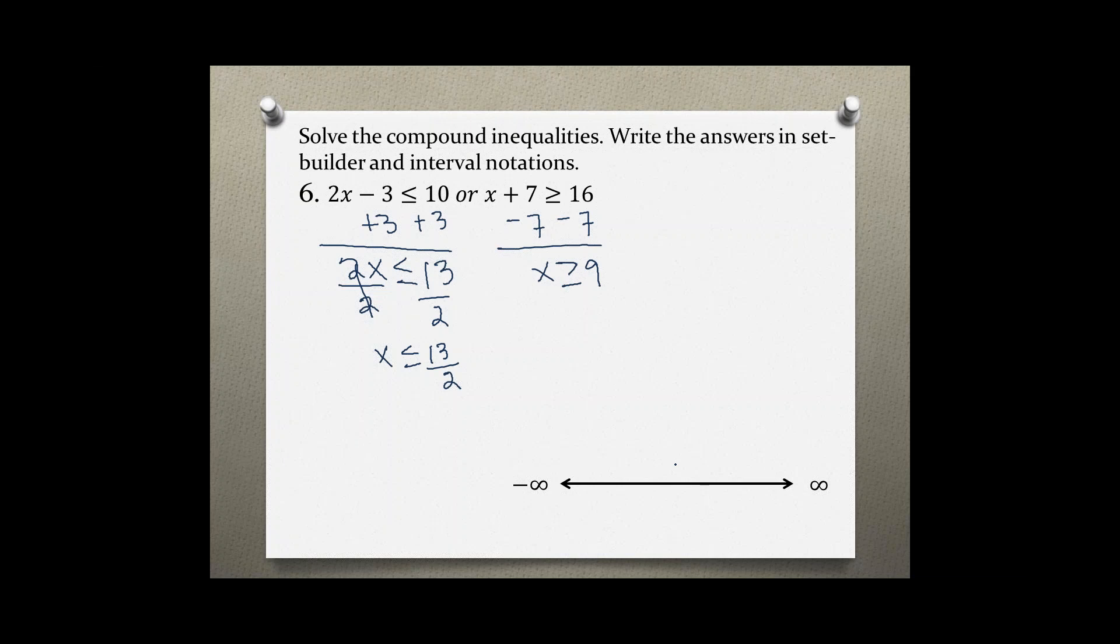So we're going to graph each number on the number line, 13 over 2 and 9. So x is less than or equal to 13 over 2, so we'll use a bracket and shade less than.